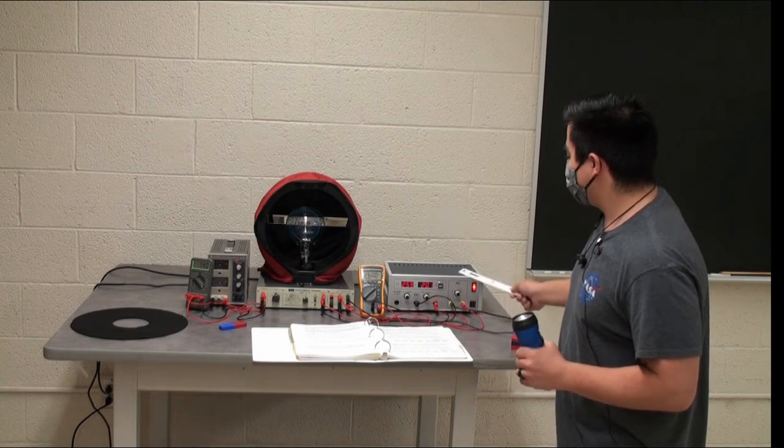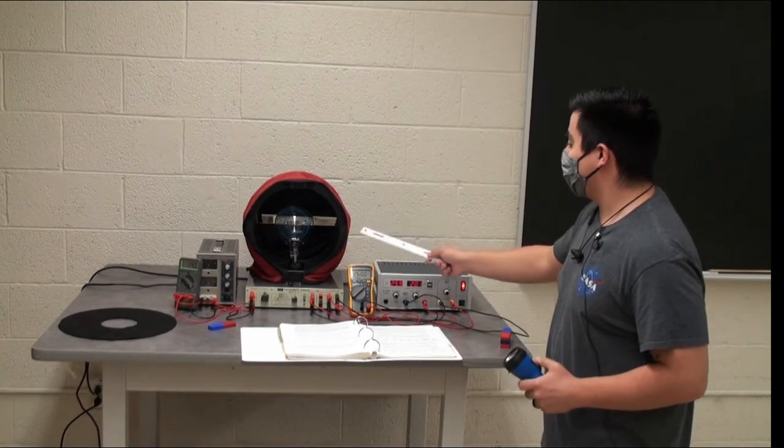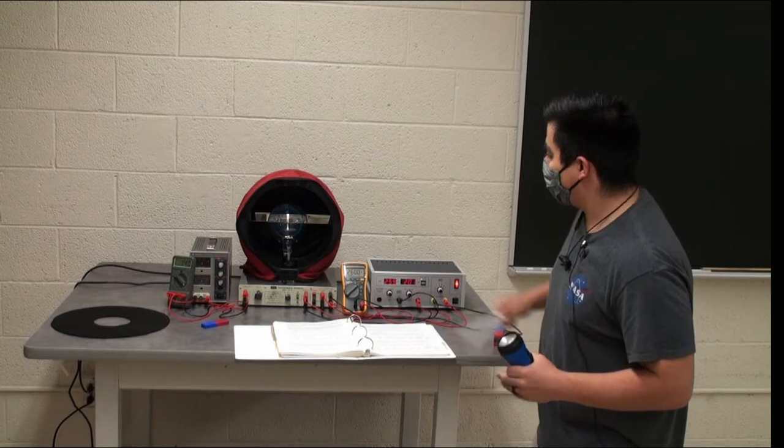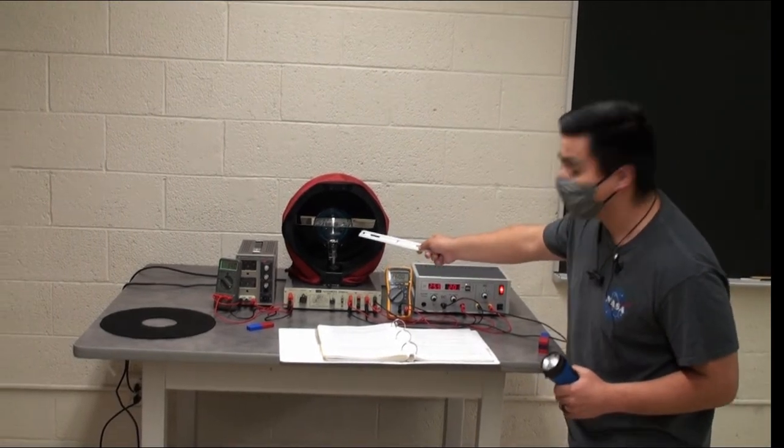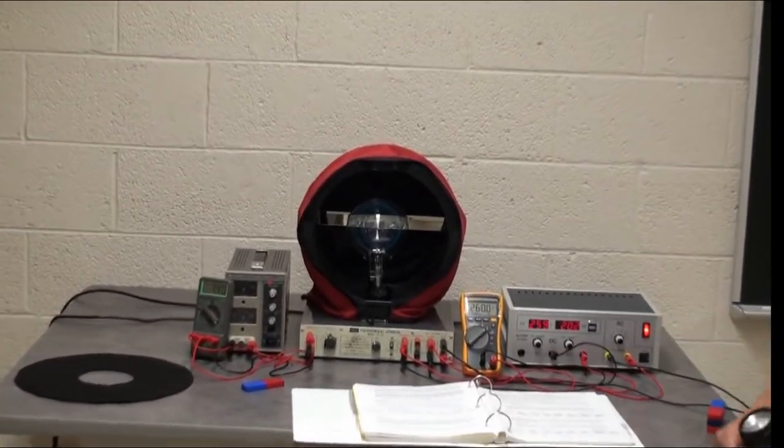We also have a power supply that's going to produce the current in the coils, and we also have an electron gun that is shooting electrons, as you can see the beam. Then you can see that there are electrons, but we'll get into that in a second.